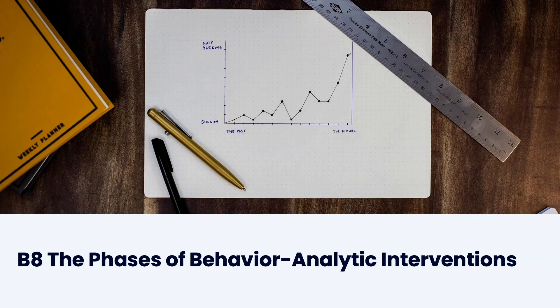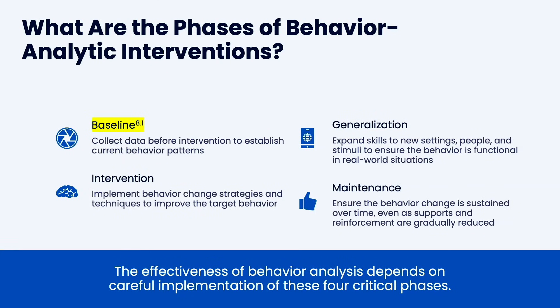A lot of this, if you continue on, is your research methods, because it's also how we do research. But it's how we're going to determine if our intervention worked or not. I'm going to go over four phases: baseline, intervention, generalization, and maintenance. We use line graphs to show this — you'll learn more about that in the graphing section.